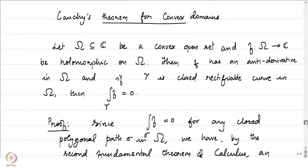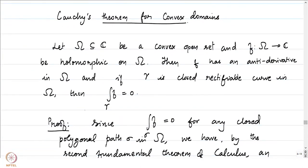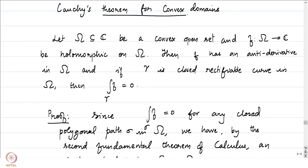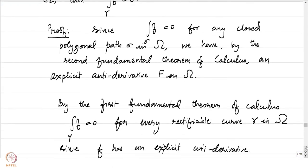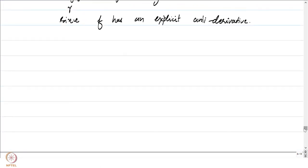So let us go back to the statement — why was it mentioned that this is Cauchy's theorem? The conclusion here is what we have in the second variant of Cauchy's theorem stated in the previous lecture, and we showed that Cauchy's theorem as stated initially and the second variant are logically equivalent. This is exactly Cauchy's theorem when omega is a convex domain. But convex domains are very special — for example, disks, rectangles, the interior of a rectangle — and we would like to prove the more general statement of Cauchy's theorem.